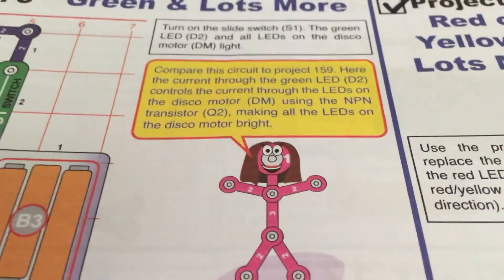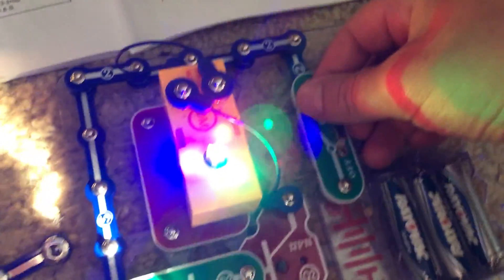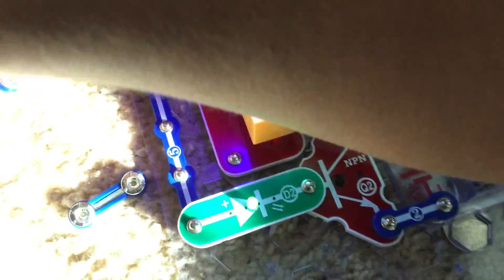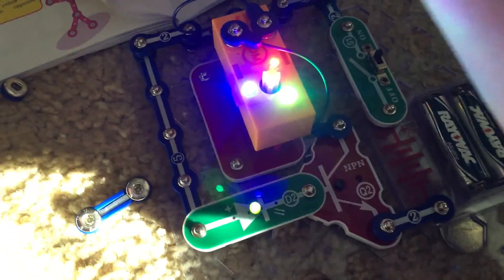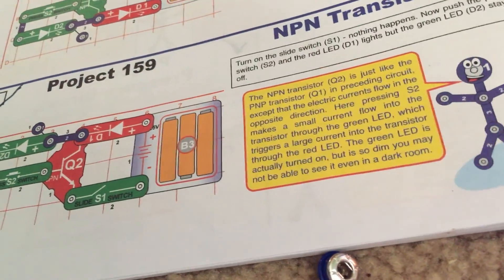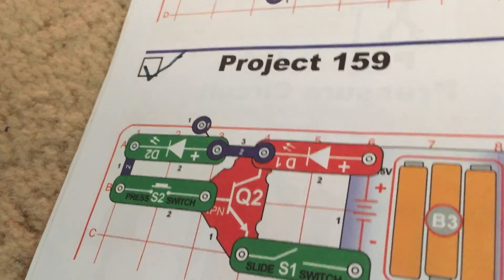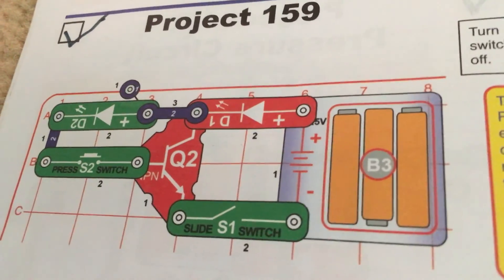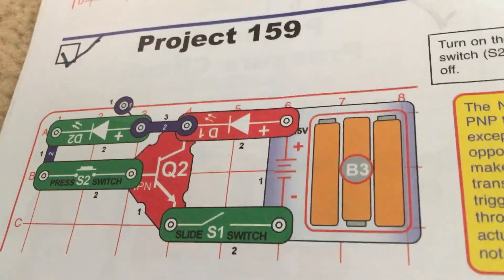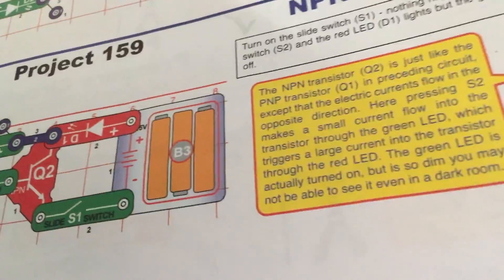This is why all the LEDs on the disco motor are bright like they are. I'm going to quickly flip back to 159, and here the green LED is on but you cannot see it even in a dark room because of how dim it is.